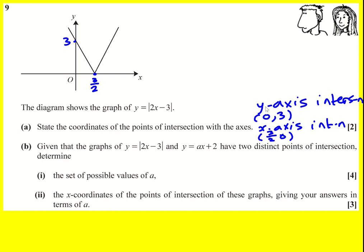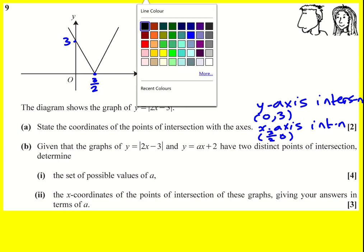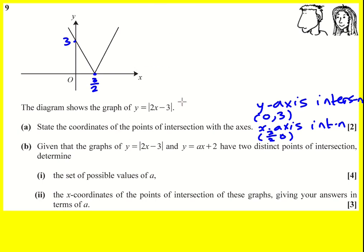Part (b): Given that the graphs of y equals modulus 2x minus 3 and y equals ax plus 2 have two distinct points of intersection, determine the set of possible values of a. This is stepping up in difficulty now. There's an 'a' for the gradient and we're not just solving an equation, we're finding where we have two different points of intersection.